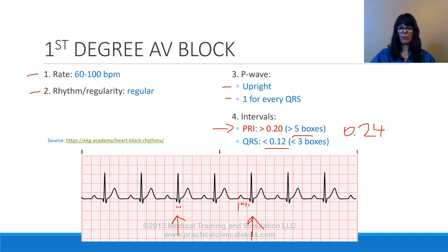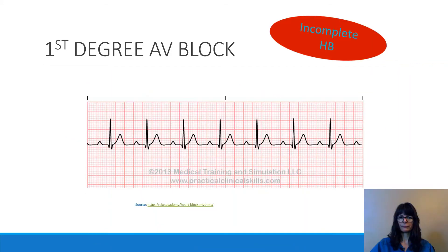In a first-degree AV block, basically everything is normal except the PRI is prolonged. Looking with the naked eye from the thick line at the beginning of the P to the beginning of the R, we can already see this is greater than one box from the thick lines. So we already know this is a first-degree AV block because the PRI is greater than 0.20 seconds.